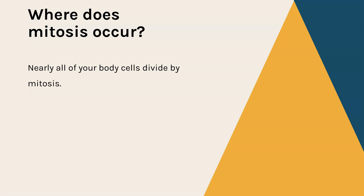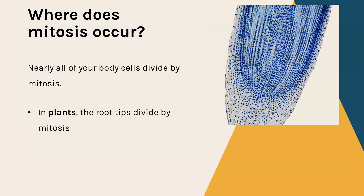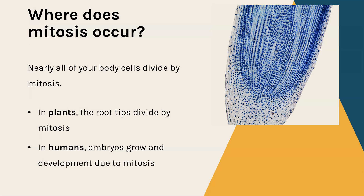Mitosis happens in nearly all of your body cells. The only body cells where it doesn't happen are the sex cells — your gametes. It happens in particular in the root tips of dividing plants, and here we can see a root tip from a plant under the microscope. At the very tip is where mitosis is happening so the roots can continue to grow in length and reach lots of water.